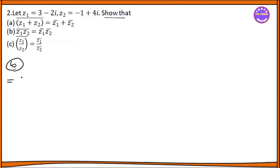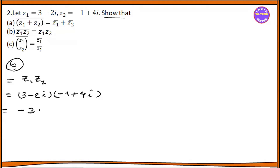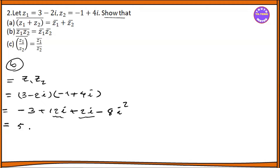So the one that we have to do is (3 minus 2i) into (minus 1 plus 4i). Now: minus 3 plus 12i plus 2i minus 8i squared.